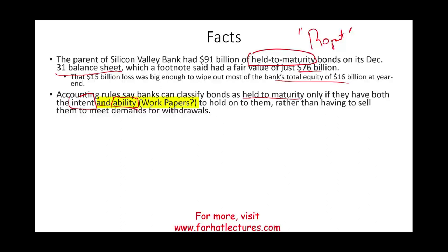We really cannot answer this question unless we know what happened between the auditor, management, and the audit committee — was that issue raised? If it was raised, then yes, the auditor made a mistake by not bringing this issue forward as a critical audit matter rather than having to sell the bonds to meet withdrawal demand.